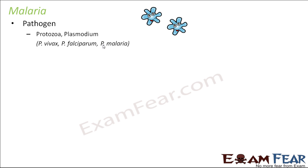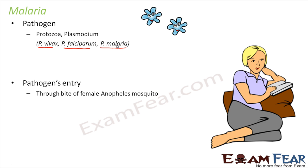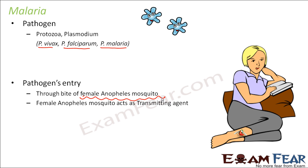The pathogen responsible for malaria is a protozoa called Plasmodium. There are many different strains of Plasmodium which can cause malaria — Plasmodium vivax, Plasmodium falciparum, and Plasmodium malaria. These are all different strains capable of causing malaria. They enter the body through the bite of a female Anopheles mosquito, which acts as a carrier of this pathogen. When the mosquito bites you, it injects the pathogen inside your body.